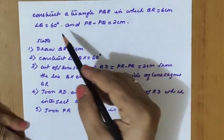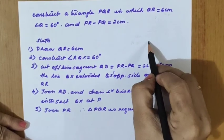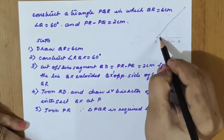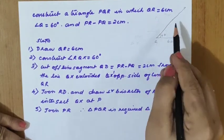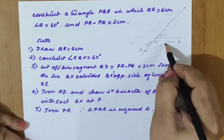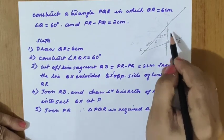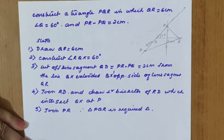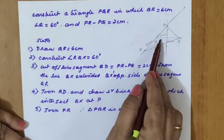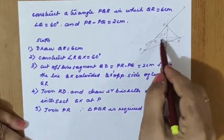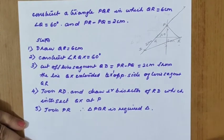Next: construct triangle PQR in which QR equals 6 centimeter, angle Q equals 60 degree, PR minus PQ equals 2 centimeter. Rough diagram: QR equals 6 centimeter, angle Q equals 60 degree. Since PR minus PQ is given and PR is greater, produce the ray backward — taking D at distance 2 centimeter on the backward ray. Join RD, draw perpendicular bisector, obtain P, and join PR. Steps: QR equals 6, angle RQX equals 60 degree, cut QD equals 2 centimeter on QX-dash, join RD, draw perpendicular bisector intersecting QX at P, join PR.